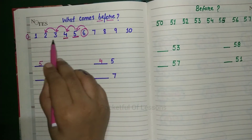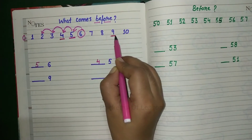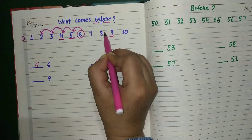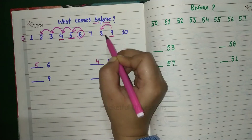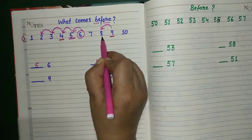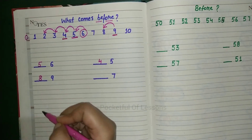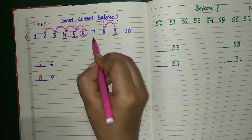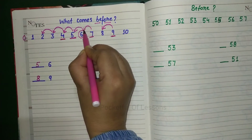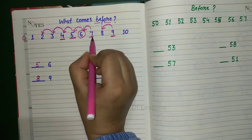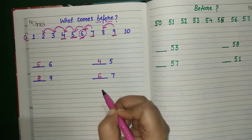9. Find the number 9 here. You will see: 9. Now you have to tell what comes before 9. Before means the left side. So what is before 9? 8. You will write 8. Then, 7 — which number comes before 7? 6. You will write 6 here.